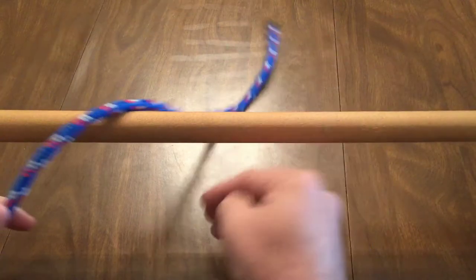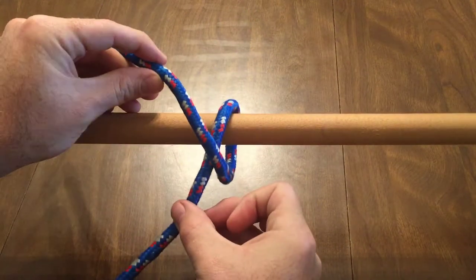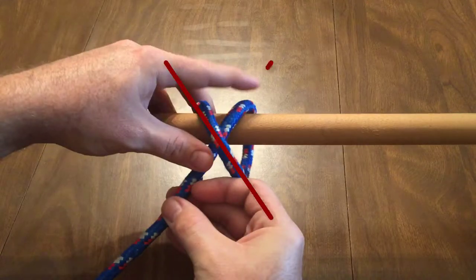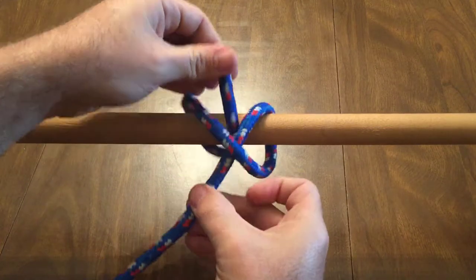When the object you're tying to doesn't have an open end, toss the rope over it. Go around again forming an X with the rope. Then push the working end through this X on the third pass.